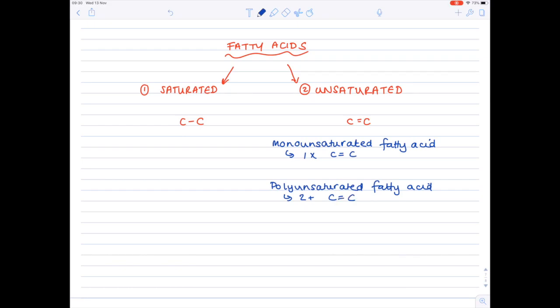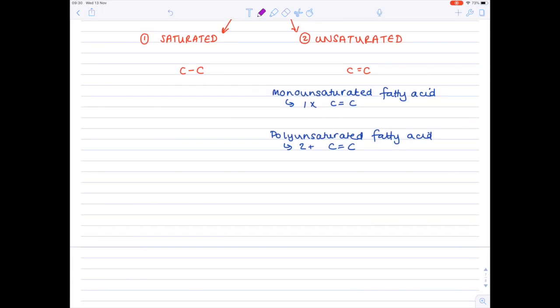Let's just draw a quick diagram of an unsaturated fatty acid. And this one's going to be a monounsaturated fatty acid, so it's only going to contain one carbon-carbon double bond. So let's start there. It has a carboxyl and the COOH.